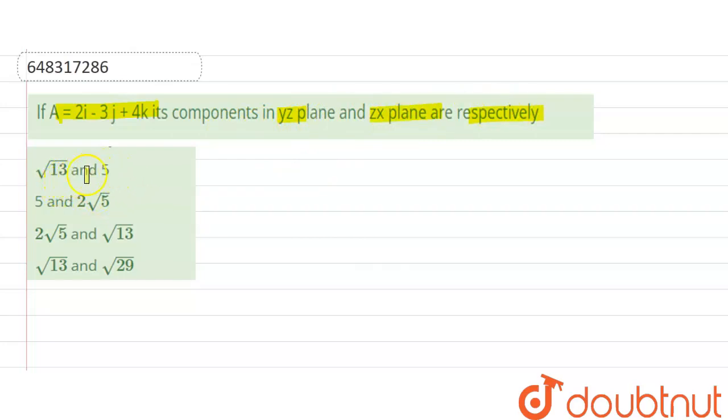Option 1 is under root 13 and 5, option 2 is 5 and 2 root 5, option 3 is 2 root 5 and under root 13, option 4 is under root 13 and under root 29.